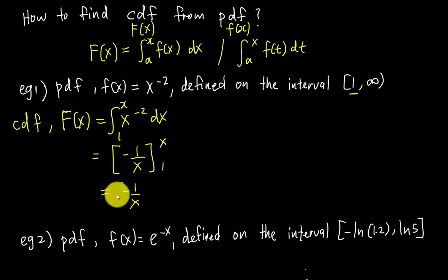This simplifies to 1 - 1/x. So my CDF equation is F(x) = 1 - 1/x. Let's look at one more example so you can understand how to do this.